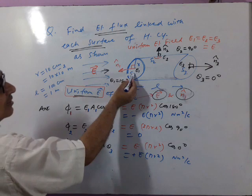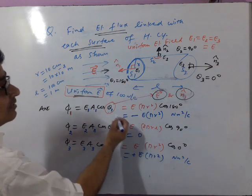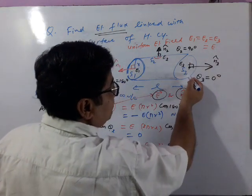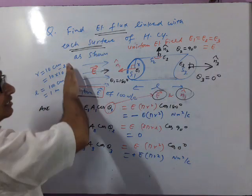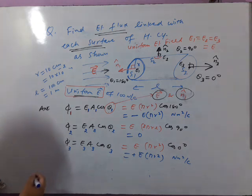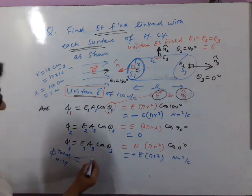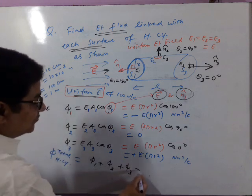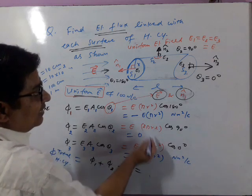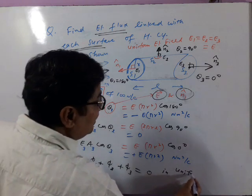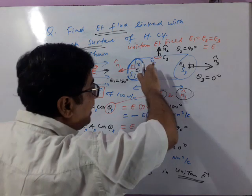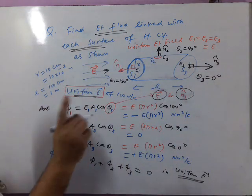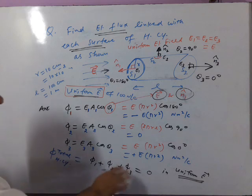Substituting: φ₁ = −E·πr² (inward, negative flux), φ₂ = 0, φ₃ = +E·πr² (outward, positive flux). Total flux = φ₁ + φ₂ + φ₃ = 0. In a uniform electric field, the same number of field lines enter and leave a closed surface, so the net flux through any closed surface is zero.